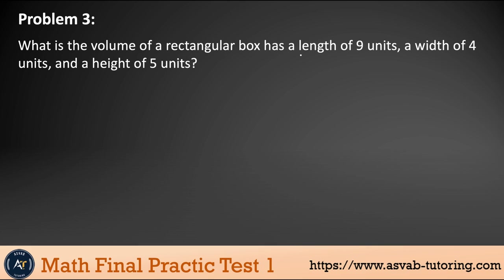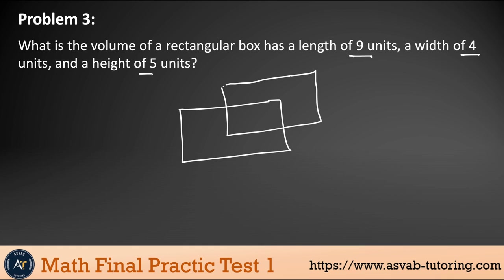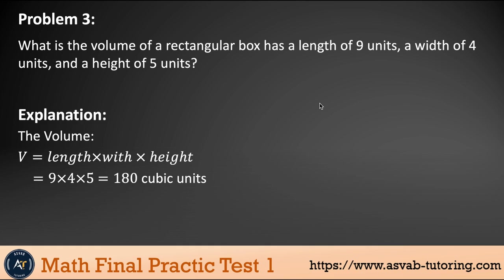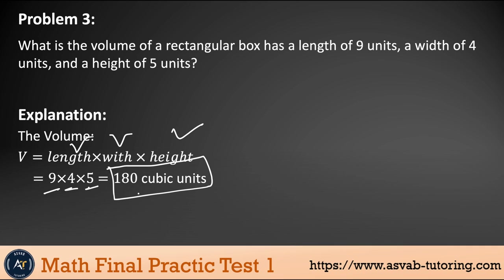Problem 3: What is the volume of a rectangular box with length 9 units, width 4 units, and height 5 units? Draw the rectangular box to understand the problem. The volume equals length × width × height: 9 × 4 × 5 = 180 cubic units. The unit of volume is cubic — it could be cubic feet, cubic meters, cubic inches, etc.